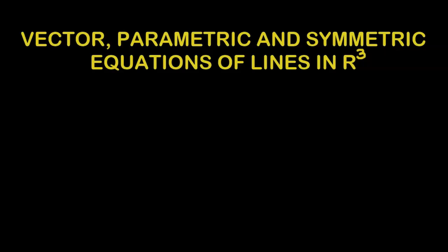Hey guys, in this lesson we would understand how to write down vector, parametric and symmetric equations of lines in R3. We have already covered vector, parametric and cartesian equations of lines in R2, but in R3 we do not have any cartesian equation. We only have vector, parametric, and the third type is called symmetric equation.